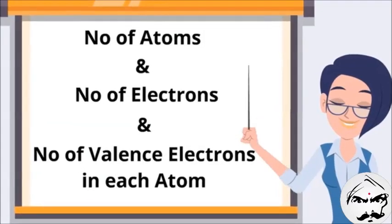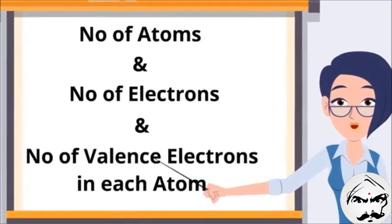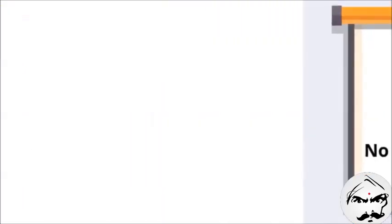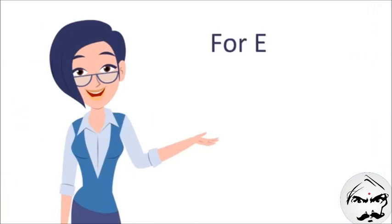It is a compound having the same number of atoms, the same number of total electrons, and the same number of valence electrons. This is called isosteric. Let us take CO2 as an example.